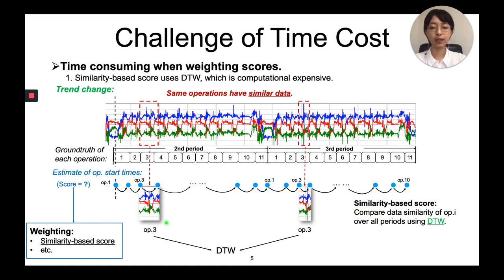As for the second challenge, when evaluating the particle series, the similarity-based score is applied to compare sensor data similarity of same operations in different periods. DTW is able to compare data similarity with different lengths, but it's quite slow.